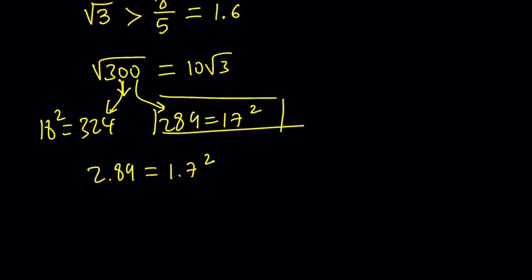In other words, if you square root 2.89, that's going to give you exactly 1.7. Nice. And since 3 is greater than that number, which means square root of 3 is going to be greater than square root of 2.89, because 3 is greater than 2.89.